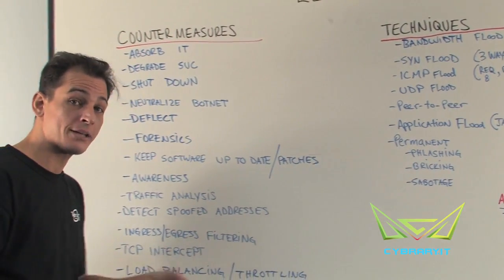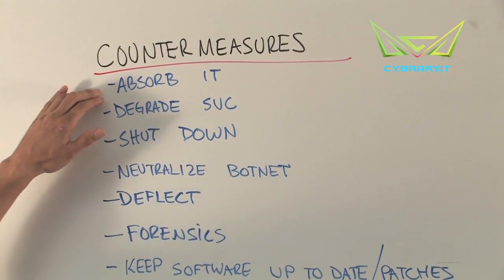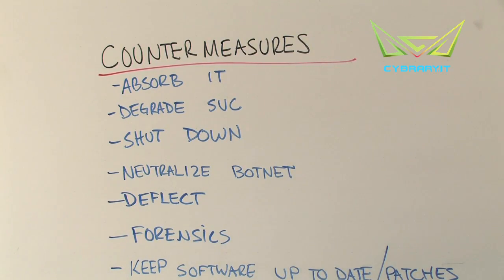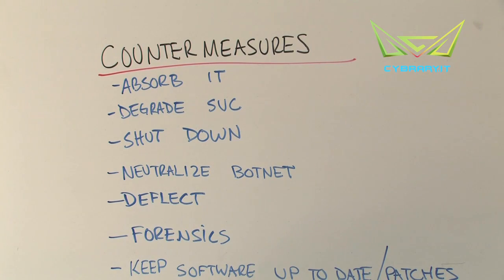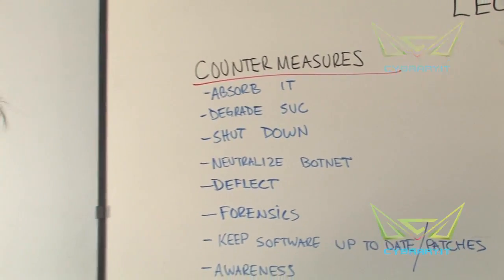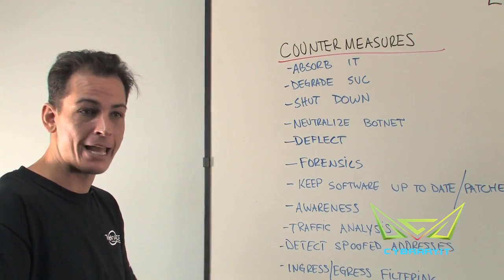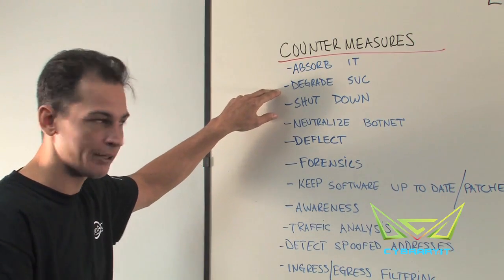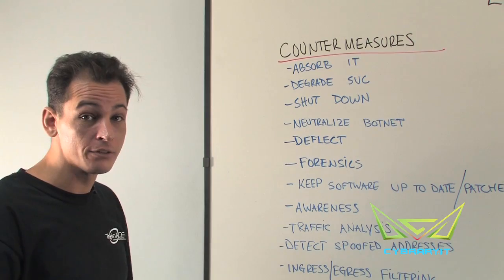Now for countermeasures. You could simply absorb the attack — what I call the 'get punched in the face' approach — where if you have a robust enough network you just take the hits. You could also allow your service to degrade and hope it passes. Think of it like a car: if your tire rolls over a nail you absorb it and keep driving, or if the car starts degrading you just keep going and hope it gets better. These are generally not good strategies.